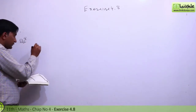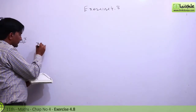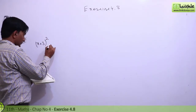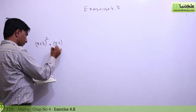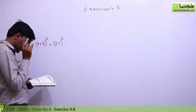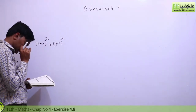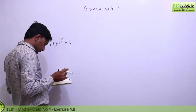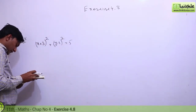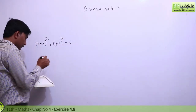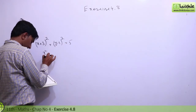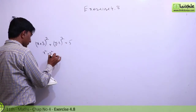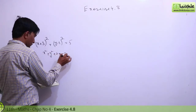Question number 8. First equation: x plus 3 whole square plus y minus 1 whole square equal to 5. Second equation: x square plus y square plus 2x equal to 9.